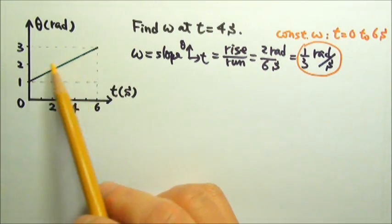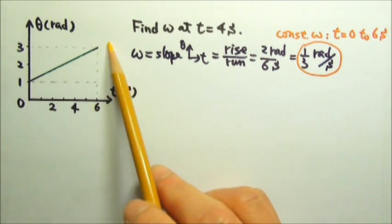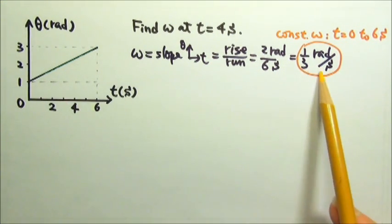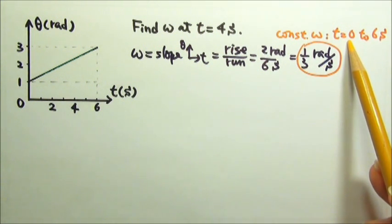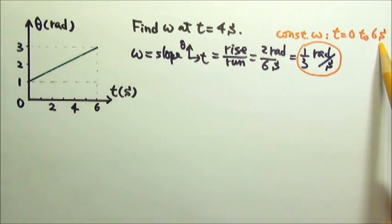Because this entire line is straight, same slope, that means this is the angular velocity, a constant angular velocity from t equals 0 all the way to 6 seconds.